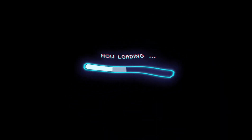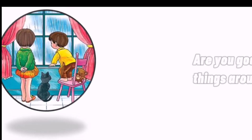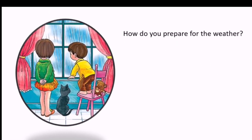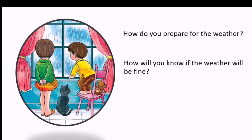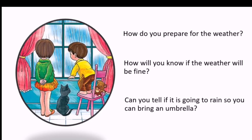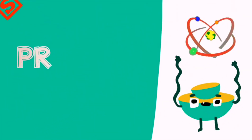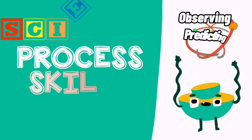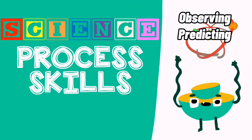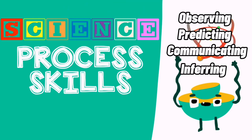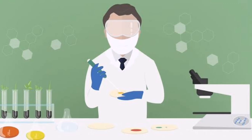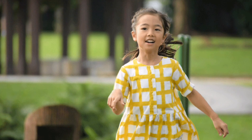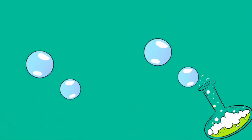Now come and join me as we solve problems like scientists do. Are you good at observing things around you? How do you prepare for the weather? How will you know if the weather will be fine? Can you tell if it is going to rain so you can bring an umbrella? You will be able to answer these questions by knowing the conditions of the atmosphere and predicting what will happen next. Observing and predicting are science process skills. You will also use other skills like communicating and inferring in studying nature. These skills are needed by scientists to do their work. Now as a student in science, you will also work the way they do it. But what are the basic science process skills?